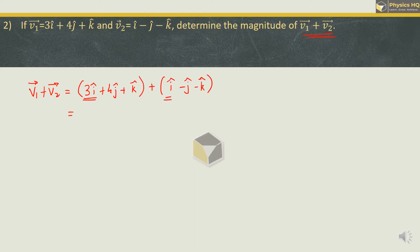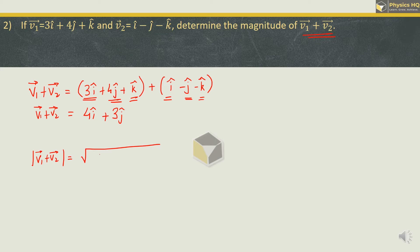3i + i becomes 4i. 4j - j becomes 3j, and +k and -k cancel out. So v1 + v2 = 4i + 3j. To find the magnitude, we take the square root of the sum of squares of all components. The x component is 4, squared gives 16. The y component is 3, squared gives 9. There is no z component. So √(16 + 9) = √25 = 5. Therefore, the magnitude of v1 + v2 is 5 units.